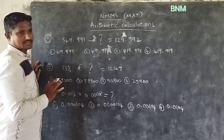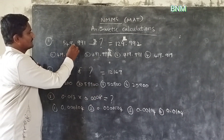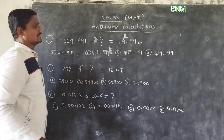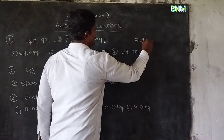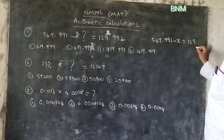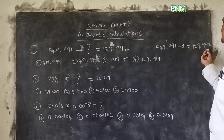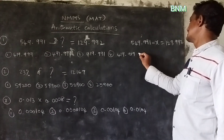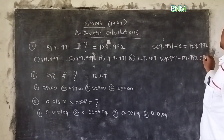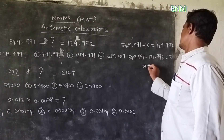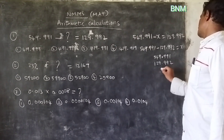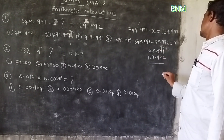This is a subtraction problem. The number: 549.991 minus 129.992. The answer is 419.991 minus — working out the subtraction. The number of x is equal to x.